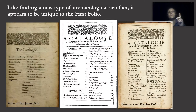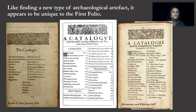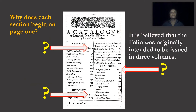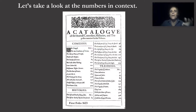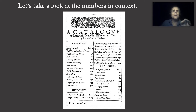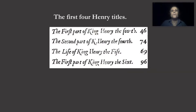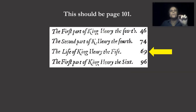This brings us to a question long posed by scholars: why does each section begin on page 1? It is believed that the folio was originally intended to be issued in three volumes, but my discovery will provide a different reason. We can also ask why the page number beginning Henry V is wrong — it should not just be to allude to Theorem 20, otherwise it could be seen as a peculiar coincidence. Let's look at the numbers in context; it is the only way to see what is really going on with these anomalous page numbers.